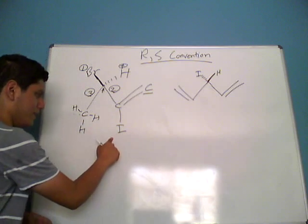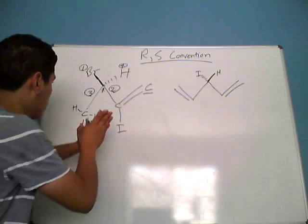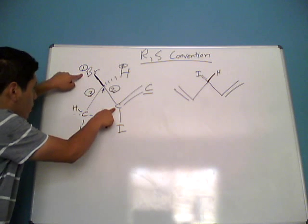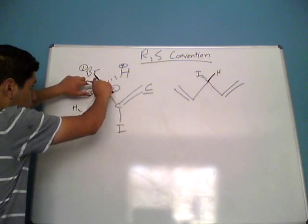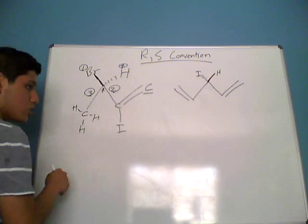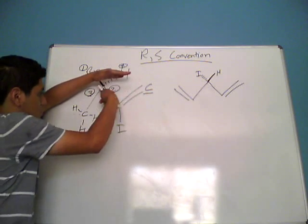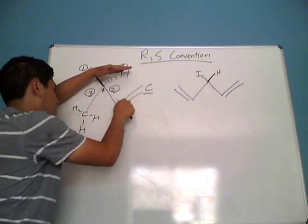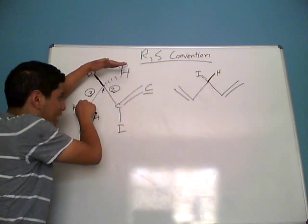You might be thinking — iodine has a greater priority than bromine, so shouldn't this be priority 1? No. When you look at the first set of atoms directly bonded to the chiral center, the first atom is bromine, and the other is carbon. Bromine has a higher atomic number than carbon, so bromine gets the highest priority. The point of first difference only matters for the two carbon substituents, where we have carbon vs. carbon at the first step — that's where iodine vs. hydrogen becomes relevant.